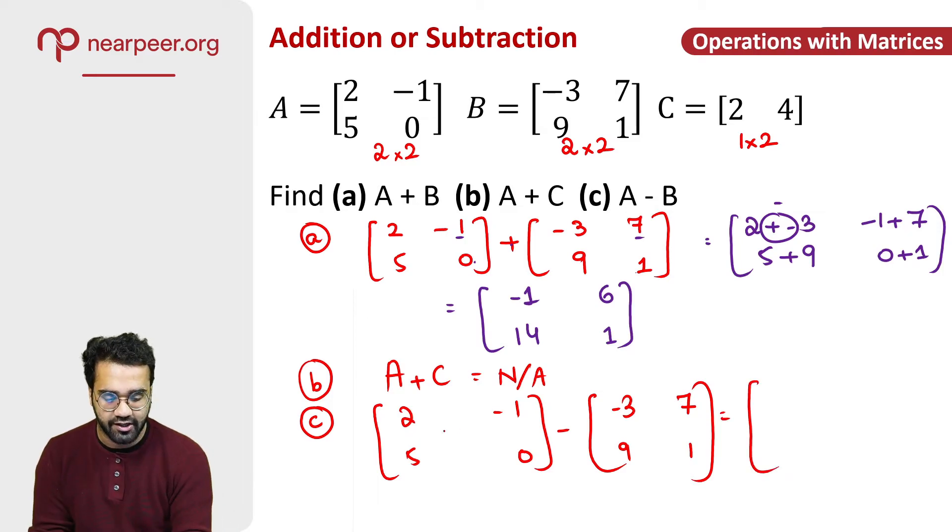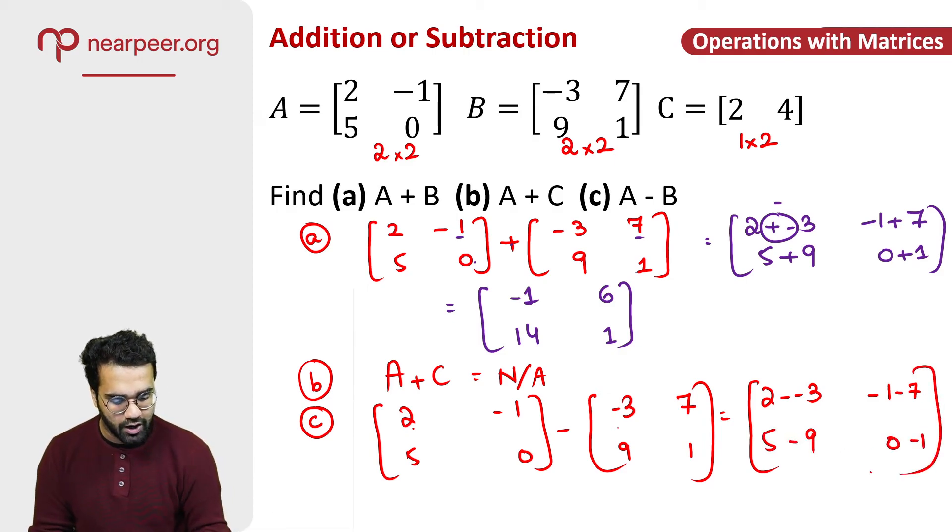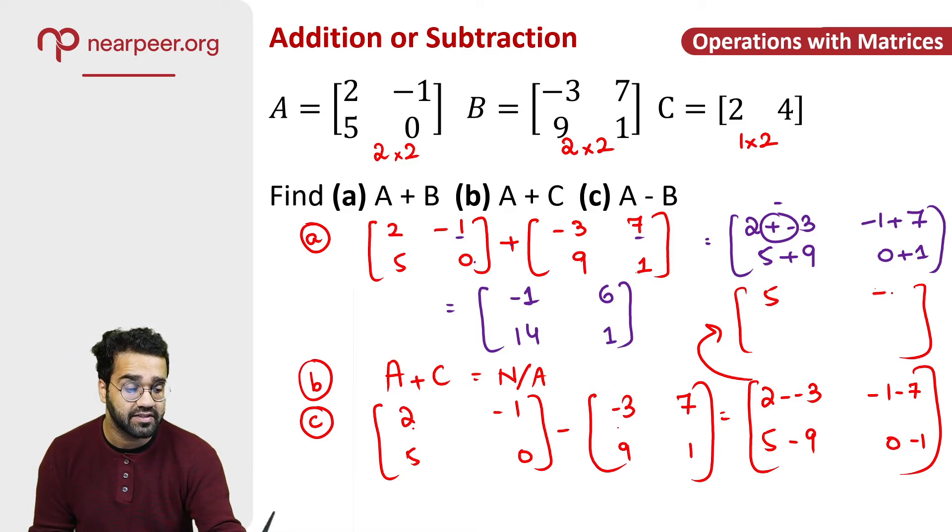So what you're going to do here is 2 minus minus 3. Why are the two minuses? Because 1 minus is here and 1 minus is over here. And then it would be minus 1 minus 7, 5 minus 9, and 0 minus 1. So this would then be, I'm just going to write the answer here. That's plus 2, 2 plus 3 is 5, minus 1 minus 7 is minus 8, 5 minus 9 is minus 4, and 0 minus 1 is minus 1. So this was A minus B.